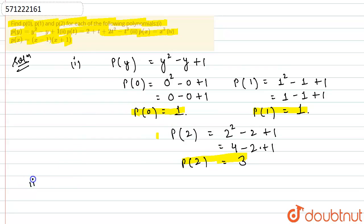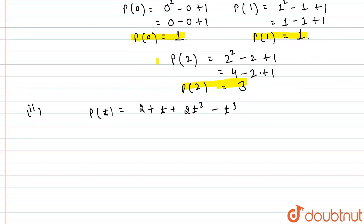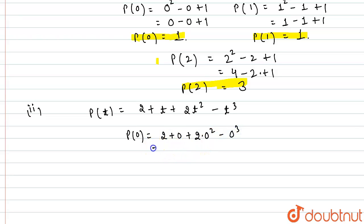Similarly, I will solve the second part. Here we are given the polynomial p(t) as 2 plus t plus 2t squared minus t cubed. So p(0) will be 2 plus 0 plus 2 multiplied by 0 squared minus 0 cubed, which gives 2 plus 0 plus 0 minus 0. So I am getting p(0) as 2.